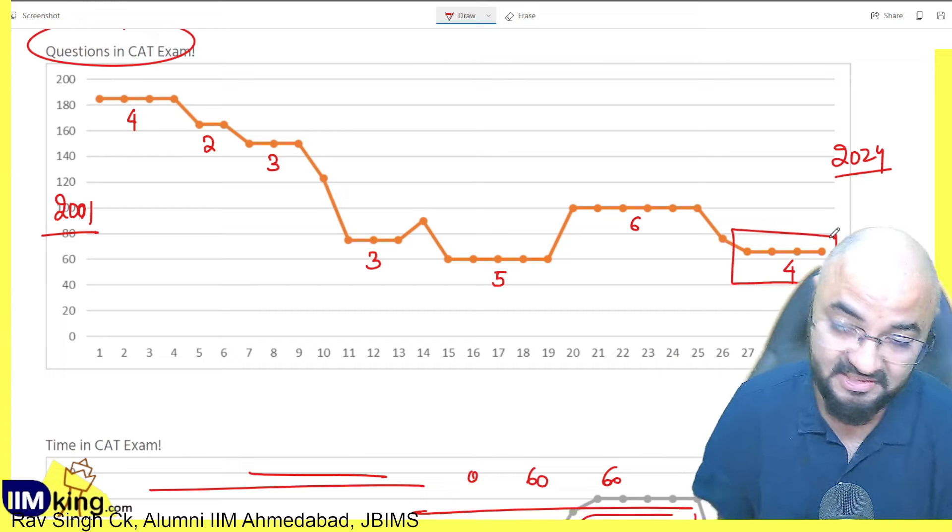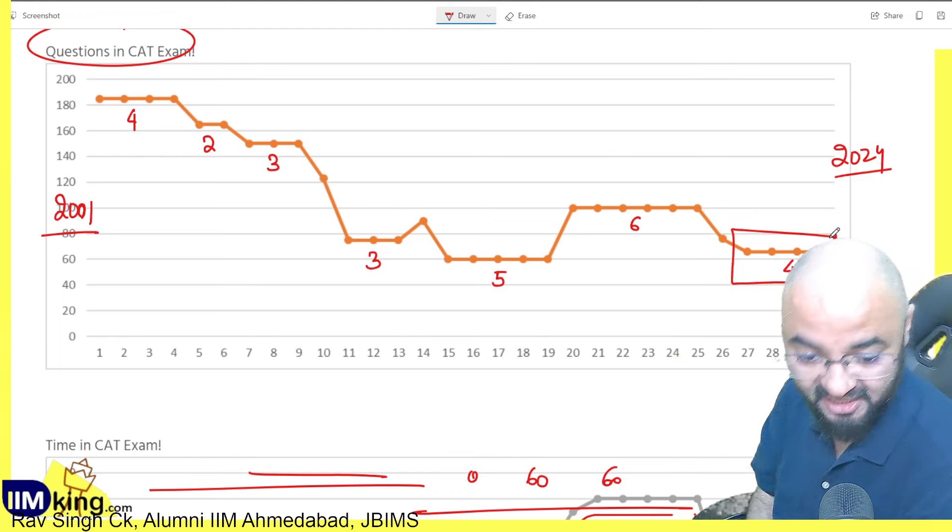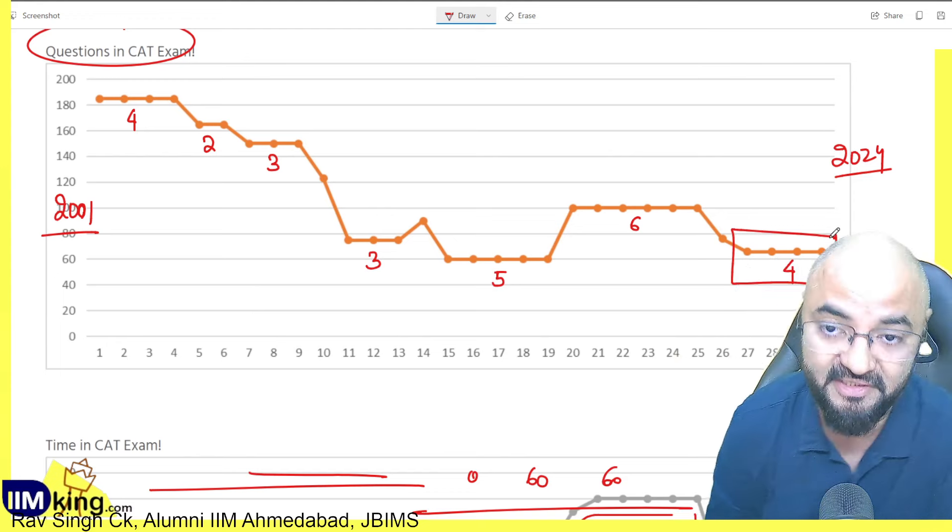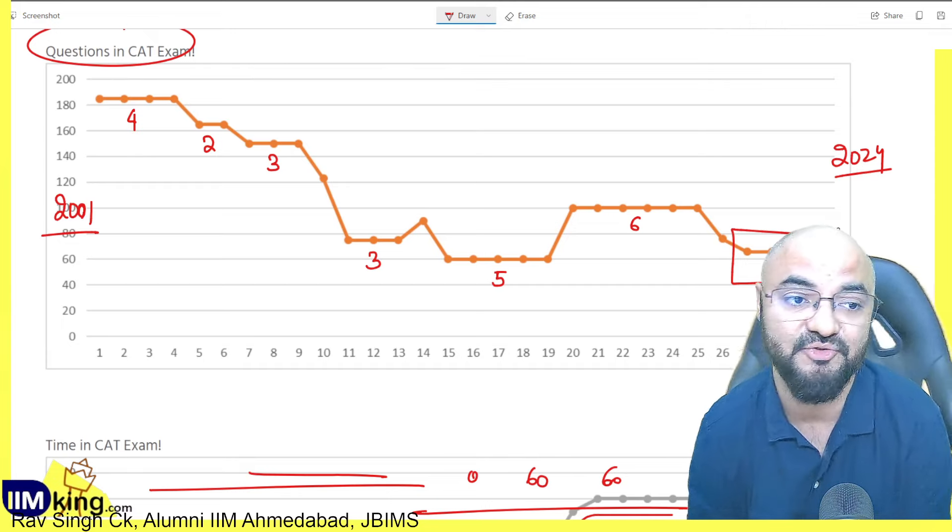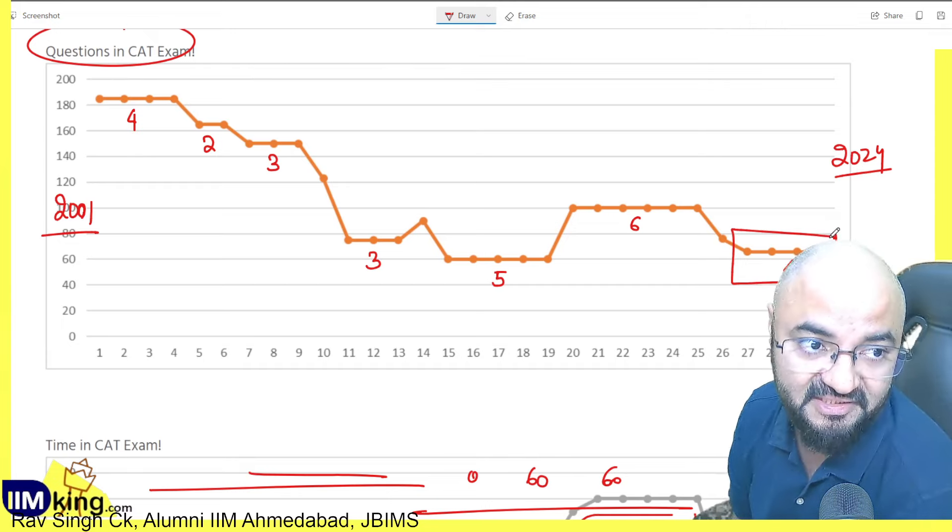So yes, both things are possible. Next 3 years pattern might change. IIM Calcutta has that authority to change this. They are collecting the paper this year. It might change, or it might not. That's a different matter.